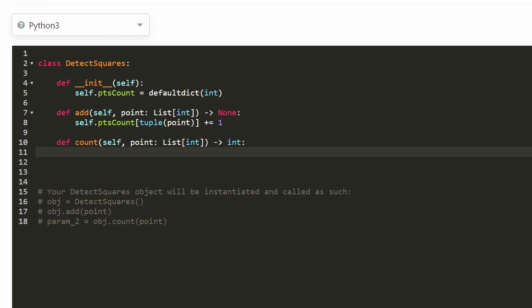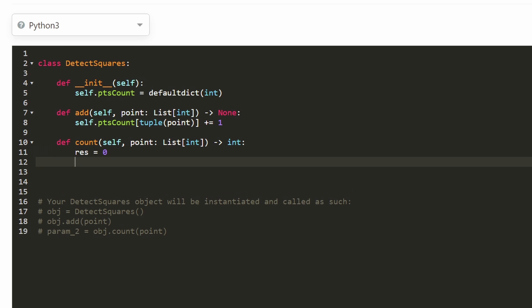Now for the interesting part is the count function. So we want to count the number of ways we can create a square. Initially, we'll say it set that result to zero. So we'll extract the X and Y coordinates of the query point that we're given. So point can be, we can easily get the X and Y coordinates of it. And then we're going to iterate through every single point in the list of points that we've saved or in our map. So every X, Y in the points count, we don't want the count of this particular point. Remember, this loop is just going through all possible diagonal values to the query point that we're given in the input, right?